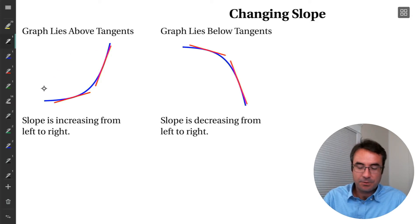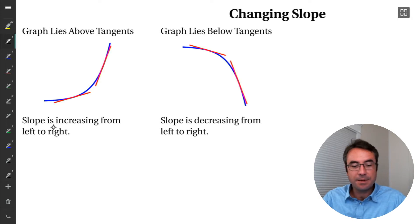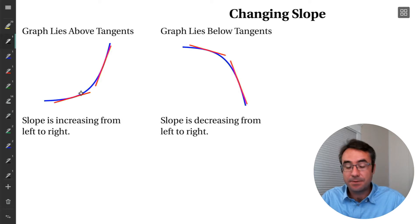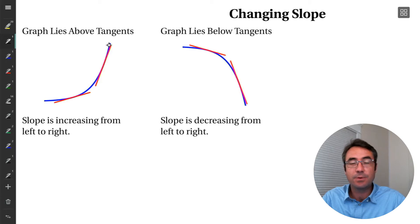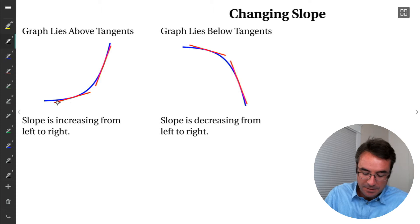So in this first graph here, we have a curve, and then we've graphed a few different tangent lines along the curve. What we're noticing is as we read this graph from left to right, the slope is increasing. So the slope of these tangent lines is increasing as we move from left to right. For instance, at this left tangent line,